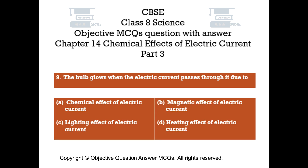Question number 9. The bulb glows when electric current passes through it due to: Option A: Chemical effect of electric current. Option B: Magnetic effect of electric current. Option C: Lighting effect of electric current. Option D: Heating effect of electric current.